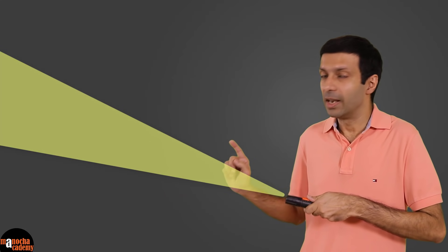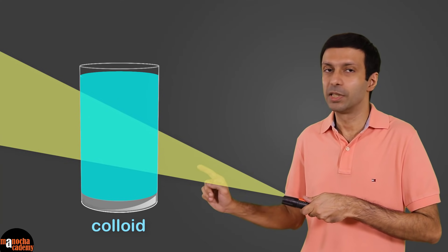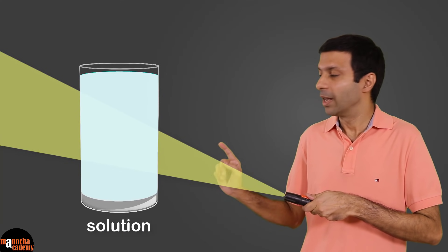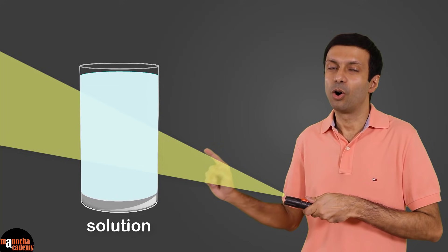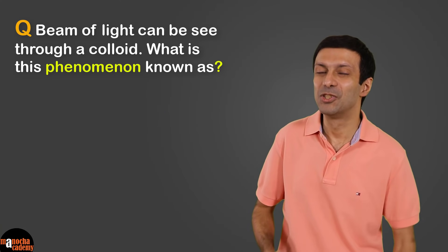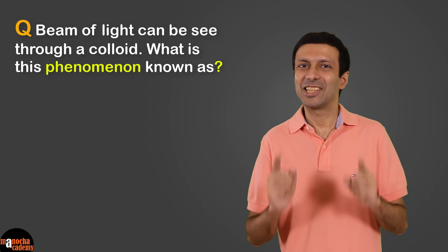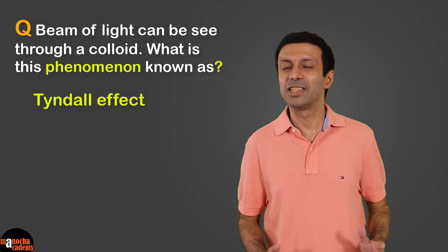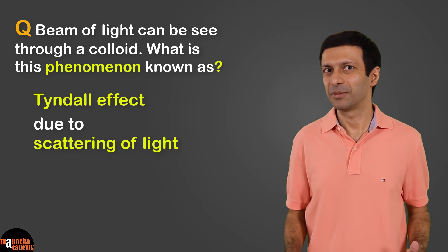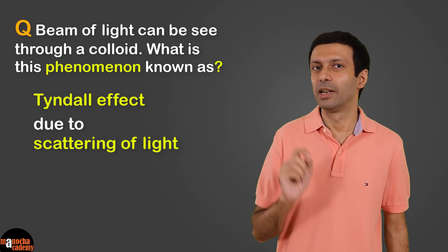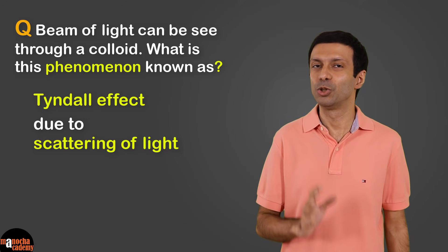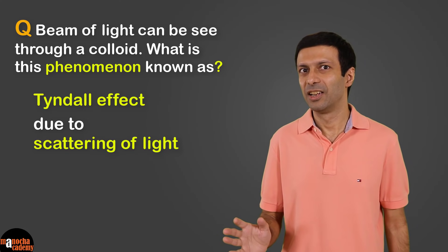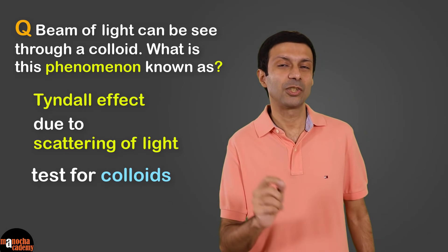Similarly, we can see the beam of light when light is passed through a colloid, but the beam is not visible when light is passed through a solution or a suspension. This is known as the Tyndall effect. Tyndall effect is due to scattering of light. Colloids show Tyndall effect but not solutions and suspensions, so it can be used as a test for colloids.